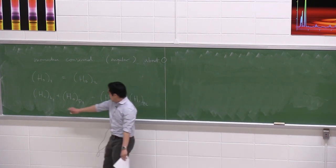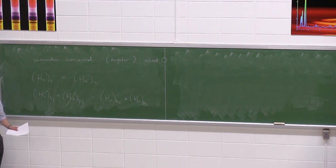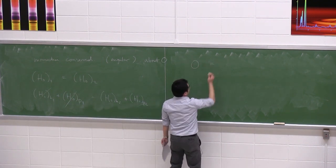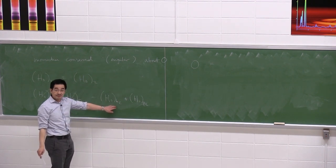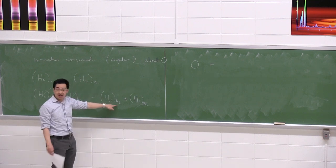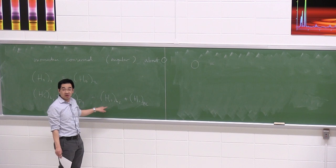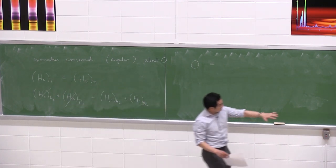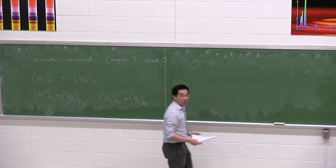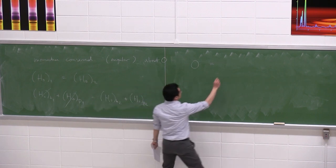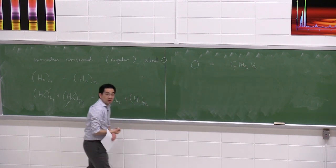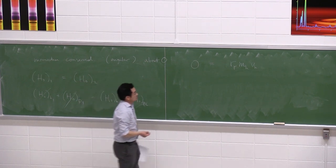Initially everything is at rest, so there is absolutely no angular momentum — zero on the left-hand side. For the right-hand side: the human is a particle running in the positive counterclockwise direction, so we use r cross mv, which gives r_p times m_h times v_h. That's the angular momentum of the human.